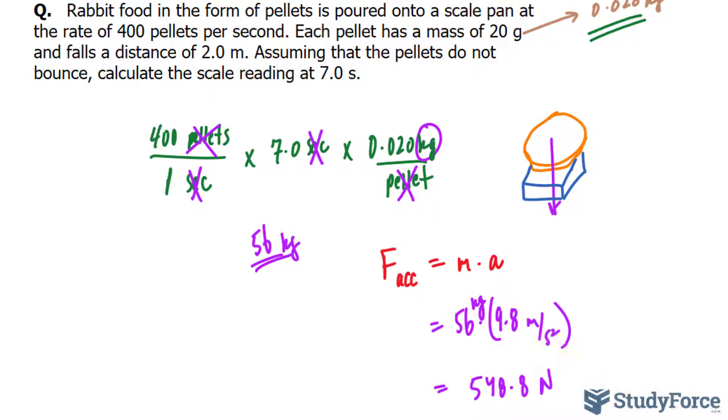So 56 multiplied to 9.8 gives us a force of 548.8 newtons. And you can round this to 550 if you like, just for simplicity's sake. 550 newtons.